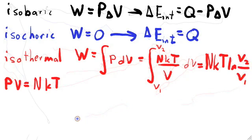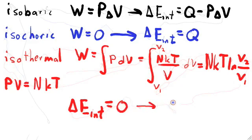We should also remember that the equipartition theorem says that the energy only depends on the temperature. And so if the temperature doesn't change, that means delta E internal equals zero. And so the first law of thermodynamics tells us that the heat flow into the system is the same as the work done by the system.